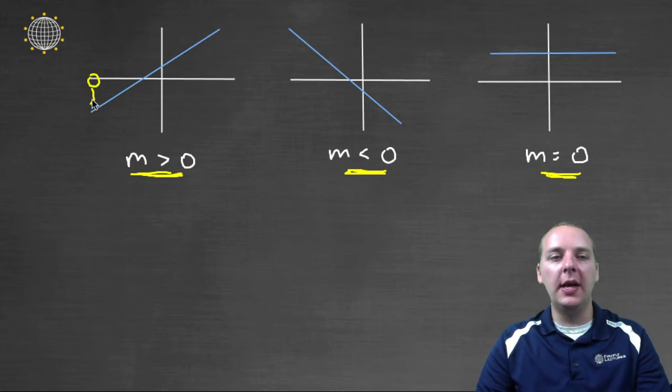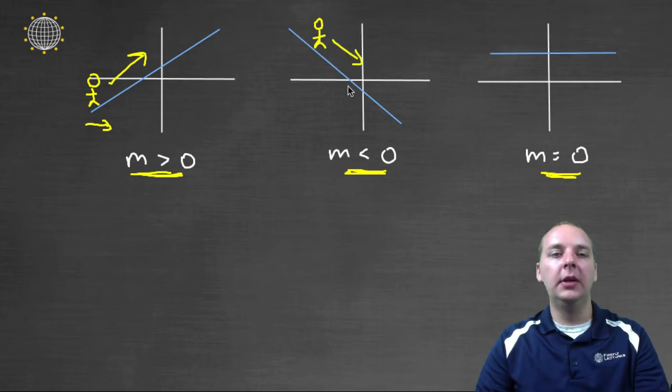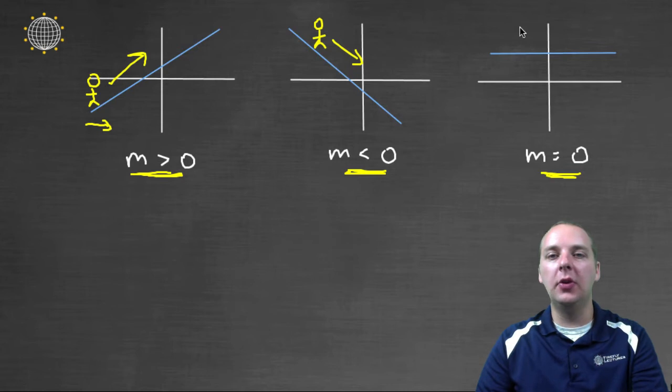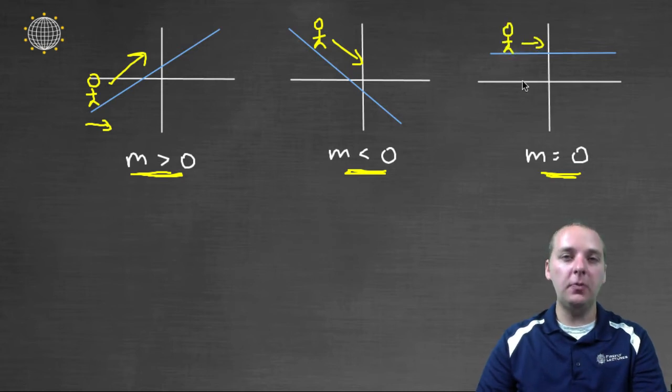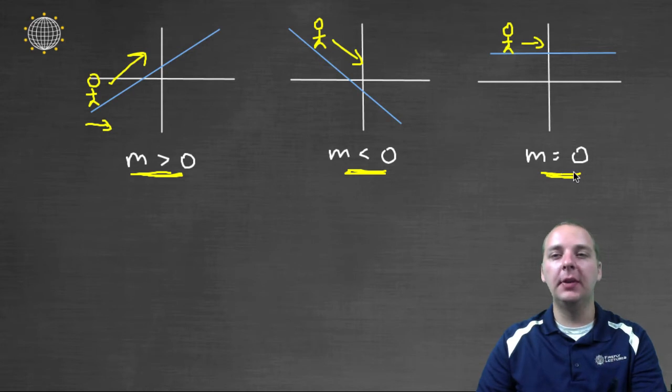For example, if there was a little man and he was walking from left to right, in the first example he's walking uphill, and in the second example he's walking downhill. So this will be a positive slope, this will be a negative slope. And if our little man is on flat ground, the slope will be zero. That's what I want, that's what I'm after.